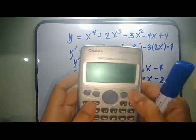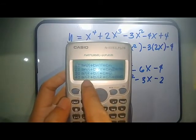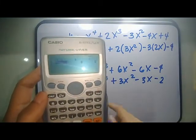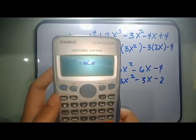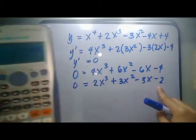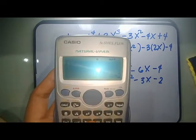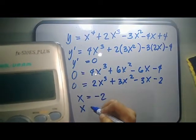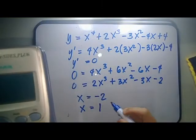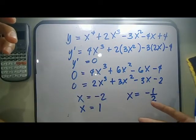You can factor this out using synthetic division, or you can use your calculator. So press mode, equation, then 5, since this is a third-degree polynomial, select 4. Then input the coefficients: 2, 3, negative 3, then press equals. So you get x equals negative 2, x equals 1, and x equals negative one-half. So these are the critical points.